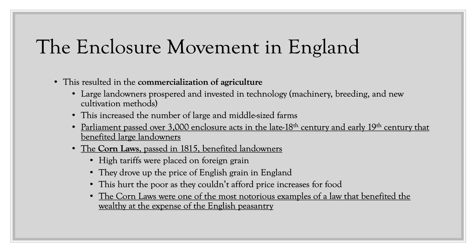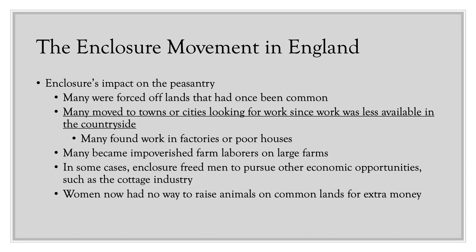The Corn Laws were one of the most notorious examples of a law that benefited the wealthy at the expense of the English peasantry — one of the clearest examples of the rich profiting and the poor suffering. The enclosure movement had a significant impact on the peasantry: many peasants were forced off lands that had once been common, and moved to towns or cities looking for work. Many found work in factories or poorhouses — a really critical step in the development of the Industrial Revolution.